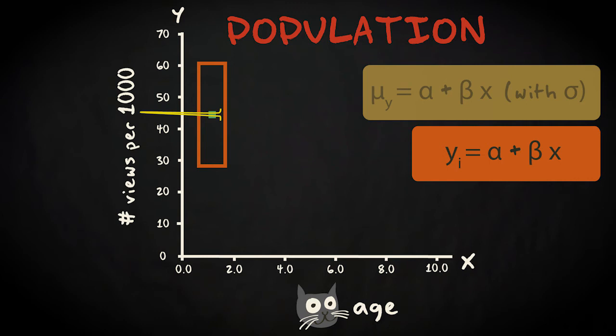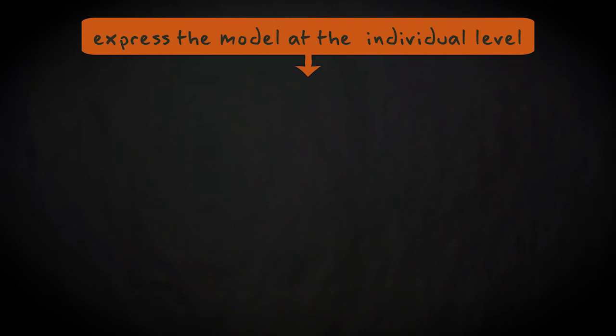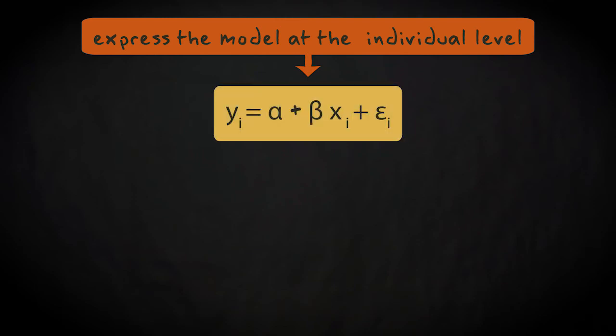There is a way to express the model at the individual level by introducing an error term. The model looks like this: y sub i equals α plus β times x sub i plus ε sub i. ε indicates the variation around the conditional mean. It describes the conditional distributions we just saw.